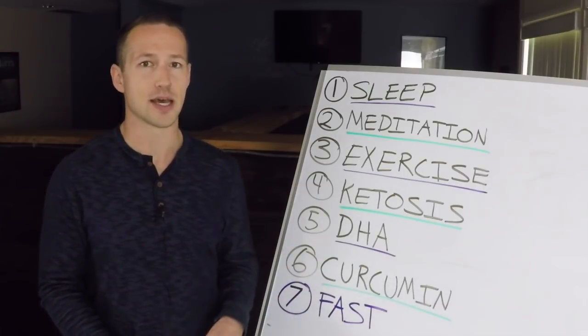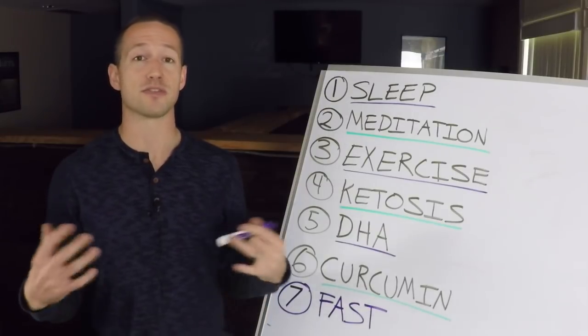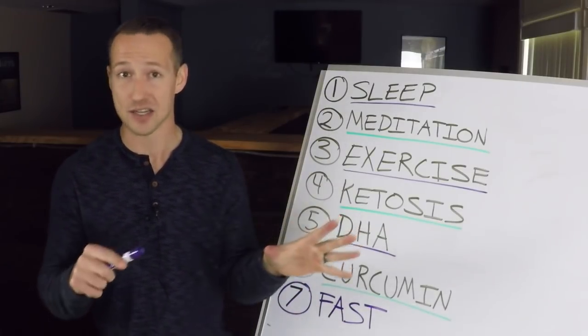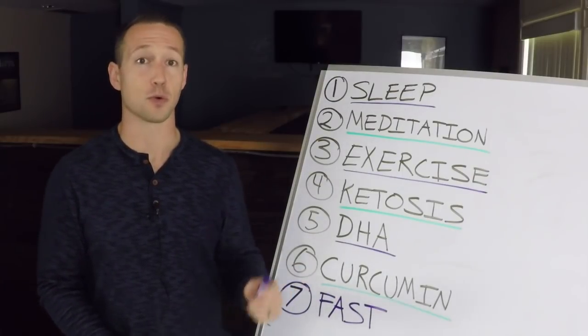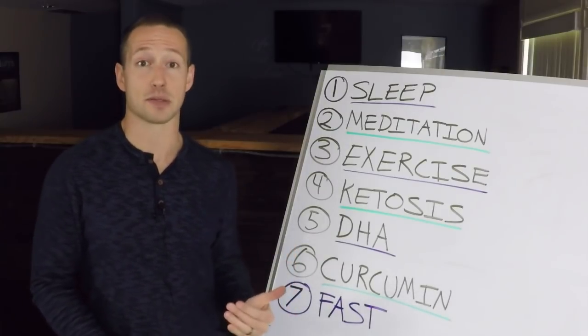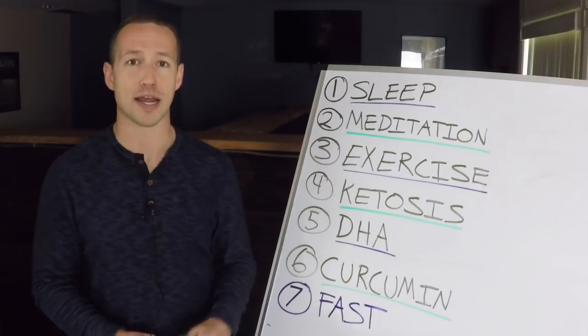Number four is ketosis. Now ketosis, as we've talked about in another video, is your body's ability to use fat as a primary fuel source. Now fat, aka ketones, is an incredible resource and fuel source for your brain to use. It's a very clean and efficient fuel source that reduces inflammation in the brain. So it's a really powerful way to optimize your brain health and performance.